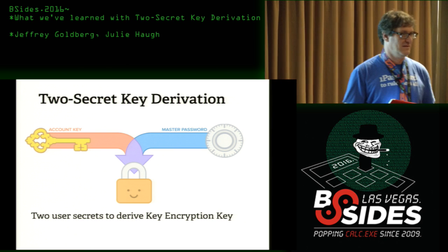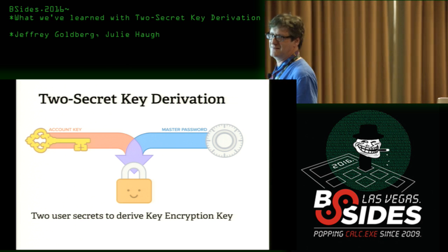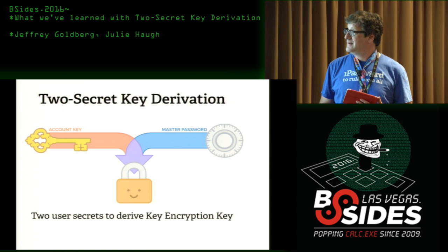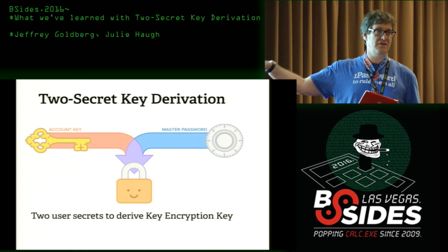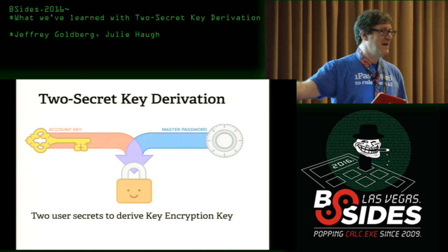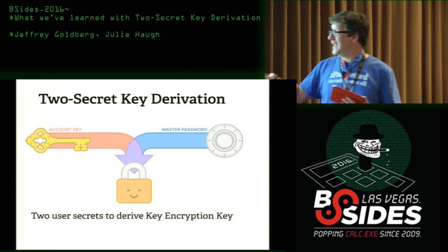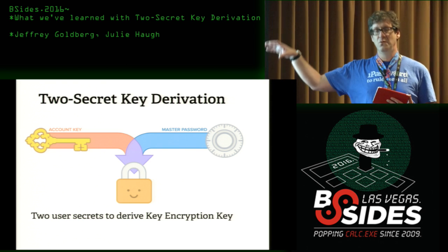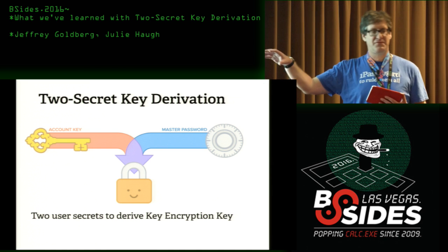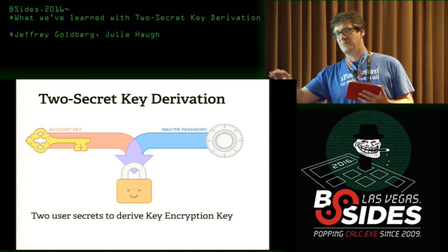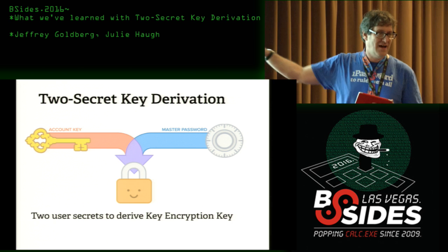Two-secret key derivation. We've been struggling with names for this thing, but this is the flavor of the week. Basically, what we're doing is deriving the keys that are used for both authenticating with the 1Password server — now that we've actually started running a service — and the keys that are used to decrypt the key encryption key that's used for encrypting your private key from your personal key set. That's way too many keys. In short: deriving the keys you actually need to unlock stuff.